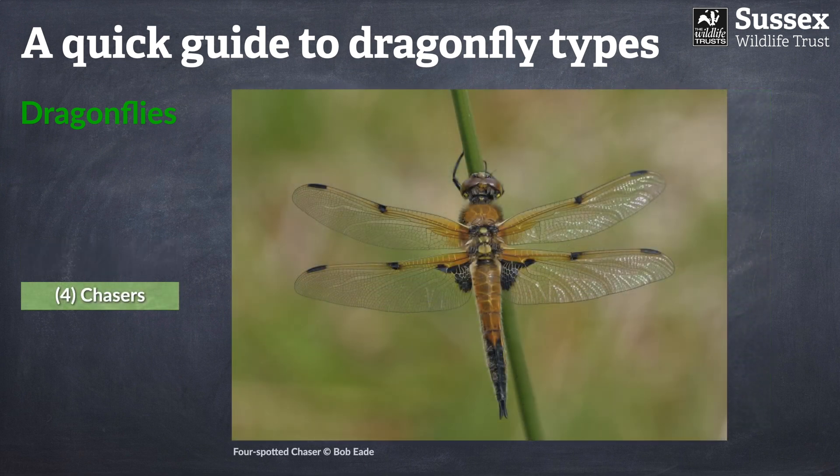The next group are the chaser dragonflies. We have three British species of chaser dragonfly — they're all medium-sized and have a very distinctive pointed tapering abdomen. They really do live up to their name because they love a prominent perch, and you'll often see them flying out from that perch — chasing away intruders, chasing prey, or chasing females in the case of the males.